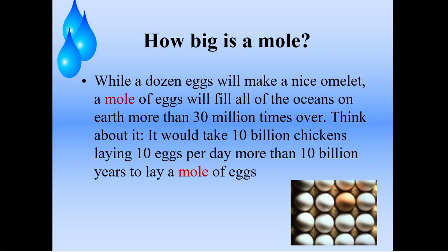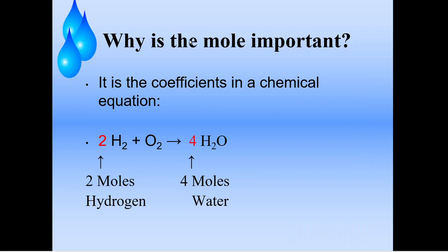A dozen eggs will make a nice omelet, but a mole of eggs would fill all of the oceans on Earth more than 30 million times over. It would take 10 billion chickens laying 10 eggs per day more than 10 billion years to lay a mole of eggs. So why is the mole important? We use it to compare different atoms on the periodic table, and we use it with coefficients in chemical equations. Those coefficients from balancing equations actually mean moles — so a 2 means 2 moles of hydrogen, a blank means 1 mole of oxygen, and a 4 means 4 moles of water.